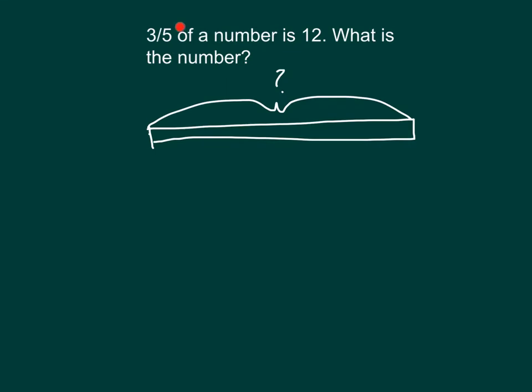Our fractional part is three fifths. It's the denominator — the five — that tells us how many parts we divide our fraction bar into. We're looking at fifths, so we'll draw four lines, making five parts. We have three fifths of the number equaling 12, so three of those fifths equals 12.